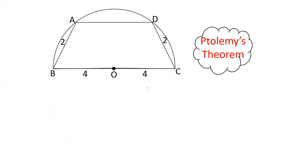Ptolemy's theorem. So Ptolemy's theorem is for a cyclic quadrilateral. Diagonals product, AC and BD product, is equal to the sum of the products of opposite sides: AB into CD plus AD into BC. This is the Ptolemy's theorem. So let's see how it will apply here.